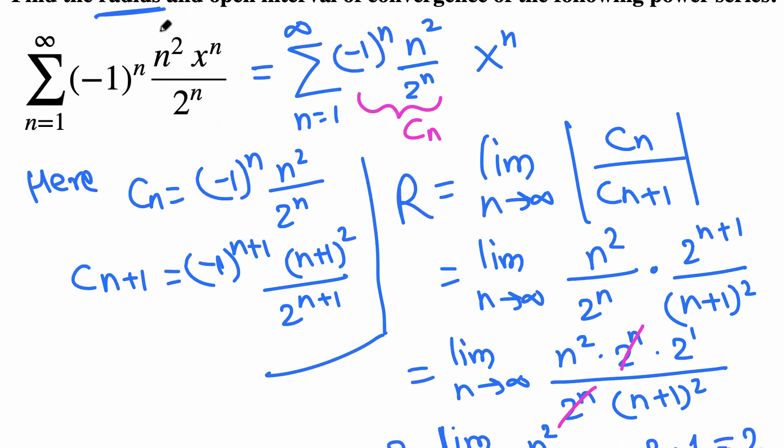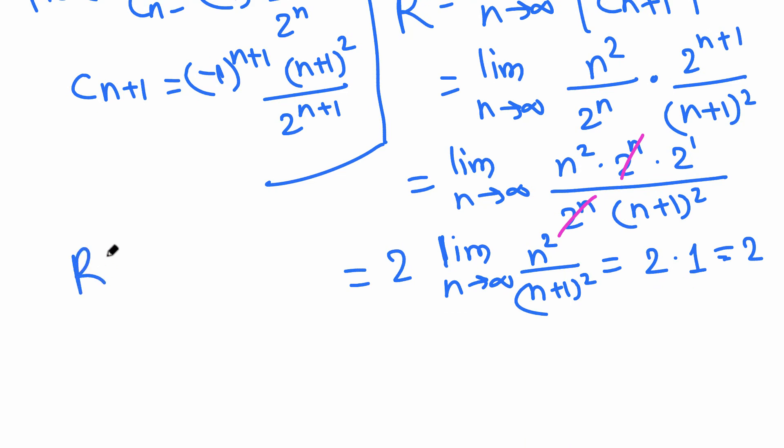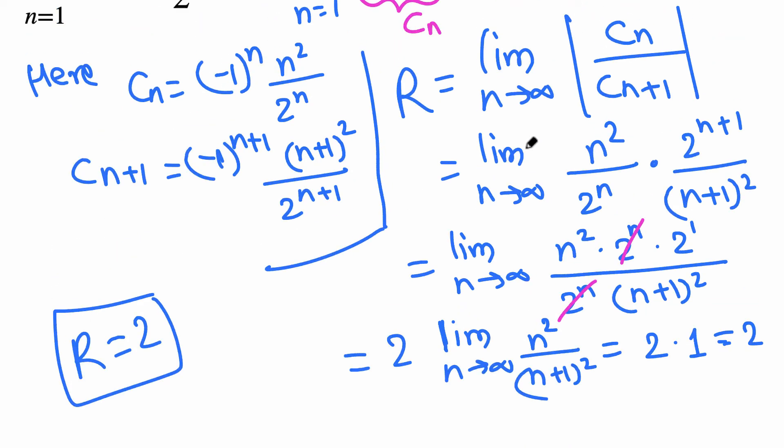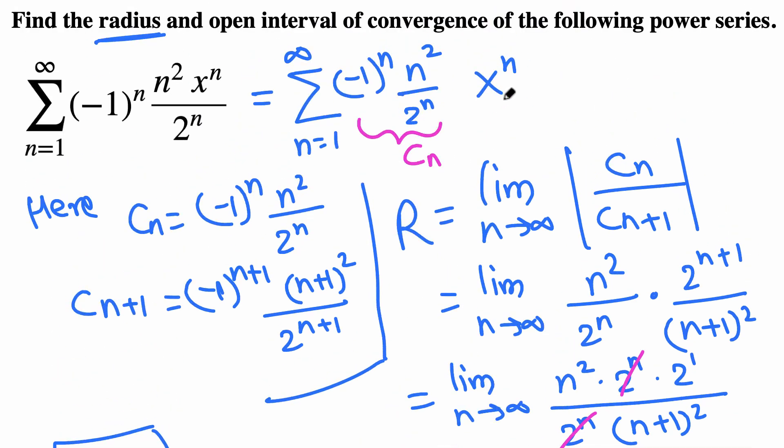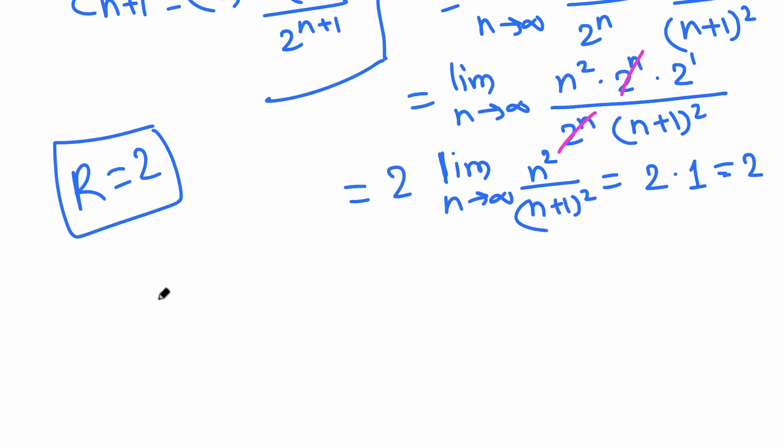That means the radius of convergence, the radius, is 2. And looking at x to the n, we got center 0, because x to the n is the same as x minus 0 to the n. So the center is 0.